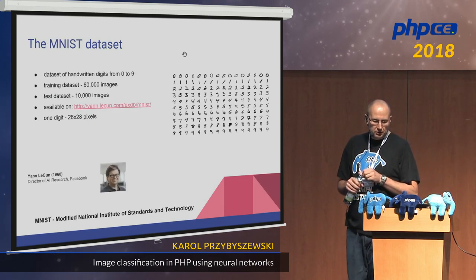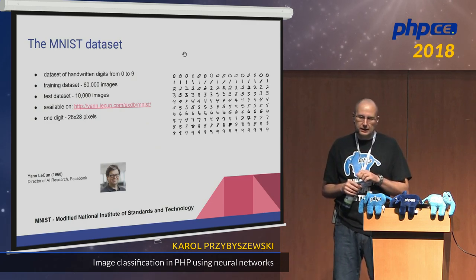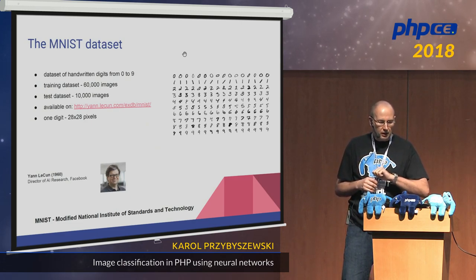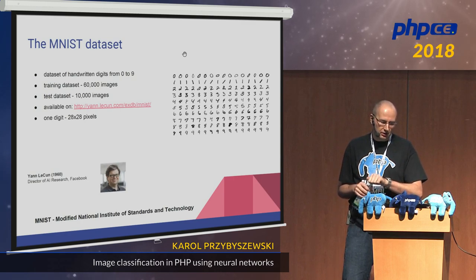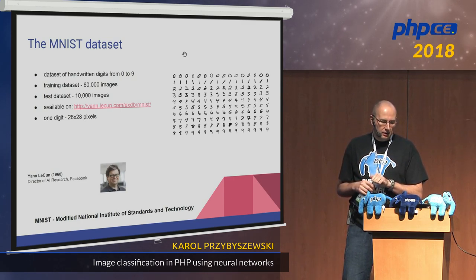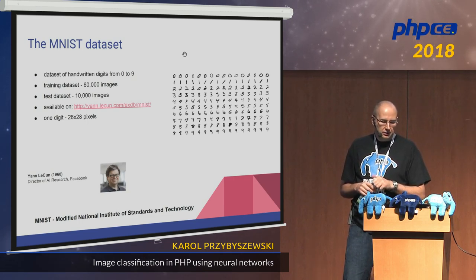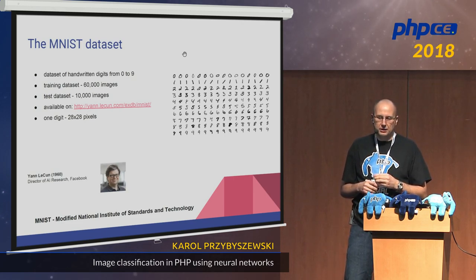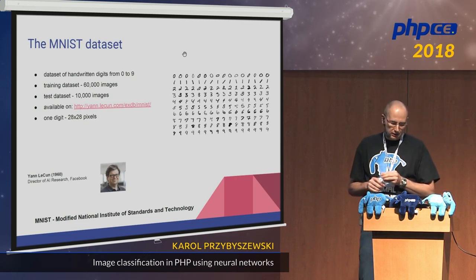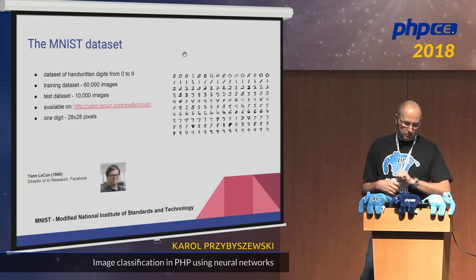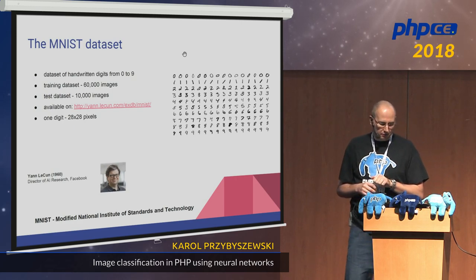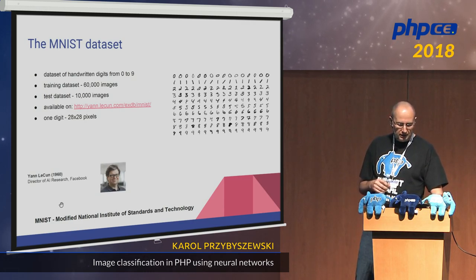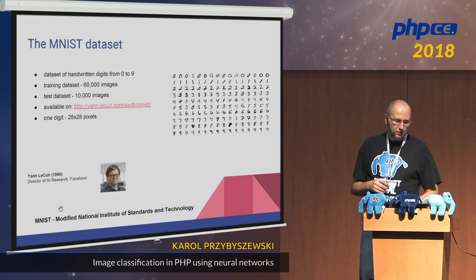For this purpose, we are going to use the famous MNIST dataset — a dataset of handwritten digits from zero to nine. The training dataset is 60,000 images and the test dataset is 10,000. It's available online. One digit is represented by 28 by 28 pixels. This dataset was prepared by Yann LeCun, who is currently Director of AI Research at Facebook. If you're wondering what the acronym MNIST means, it's Modified National Institute of Standards and Technology.